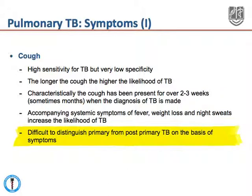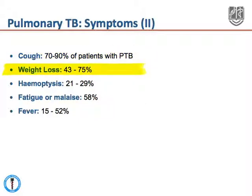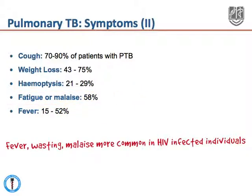It is difficult to distinguish primary from post-primary TB on the basis of symptoms alone. To summarize the key symptoms of pulmonary TB: cough occurs in about 70 to 90% of patients, weight loss in up to 75%, hemoptysis in up to 30%, fatigue or malaise in up to 60%, and fever in up to half of patients. Fever, wasting, and malaise tend to be a lot more common in patients who are HIV-infected.